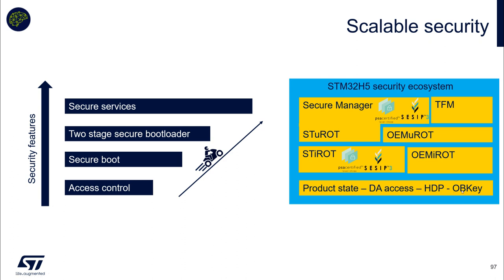If you want a pre-certified solution, you can use STI-ROT for a first-stage bootloader, which is PSA and CESIP level 3. If you want to use an open-source one, we provided it as well, named OM-I-ROT. But if you need to go for a certification, you will be responsible for this one.